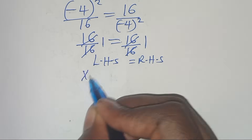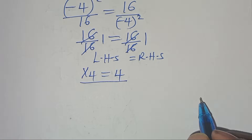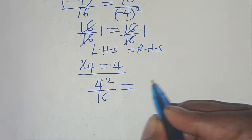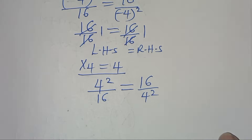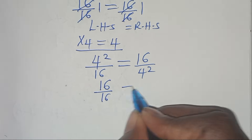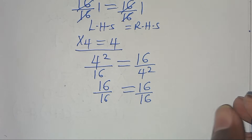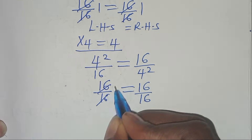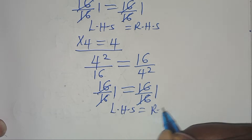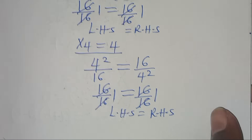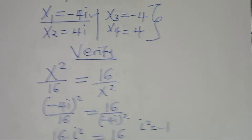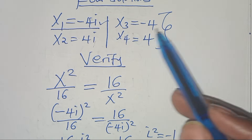For x₄ = 4: 4²/16 = 16/4². We get 16/16 = 16/16, which is 1 = 1. The left-hand side equals the right-hand side, confirming x₄ = 4 satisfies the equation. All four solutions satisfy the original equation.